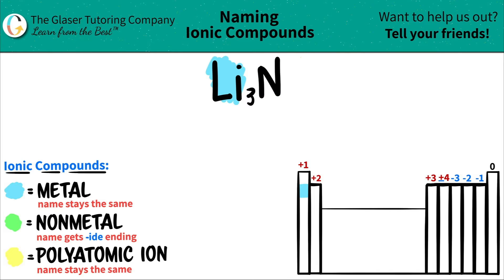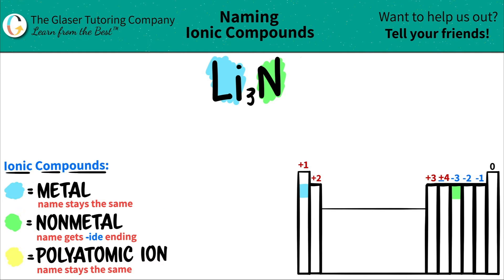Nitrogen, on the other hand, is all the way over here. It's in non-metal territory. Nitrogen is always going to be a non-metal. Now we have all the elements accounted for, so let's start naming.